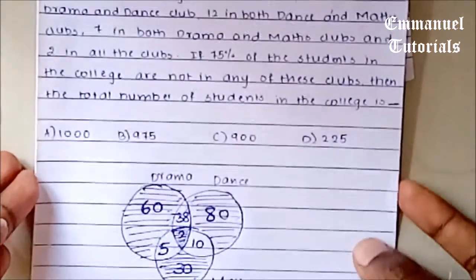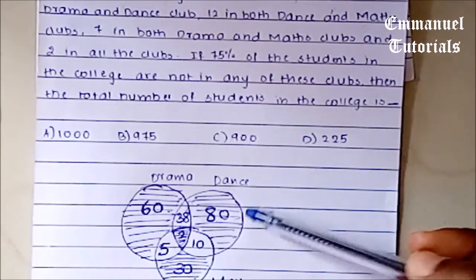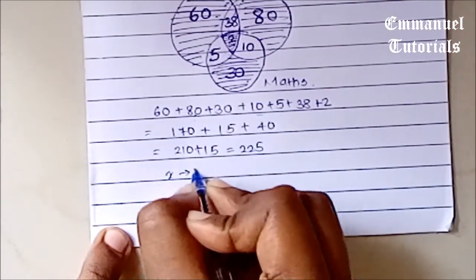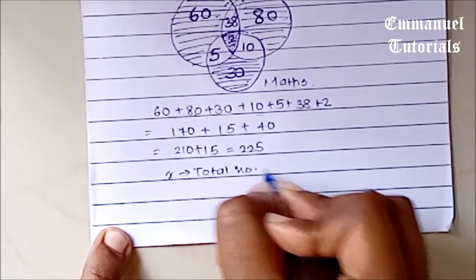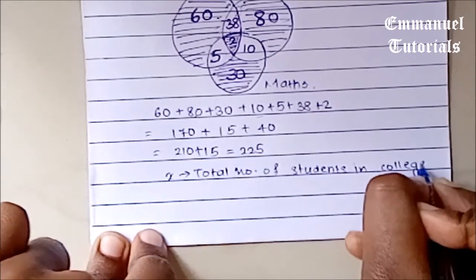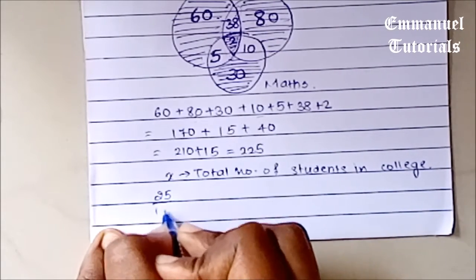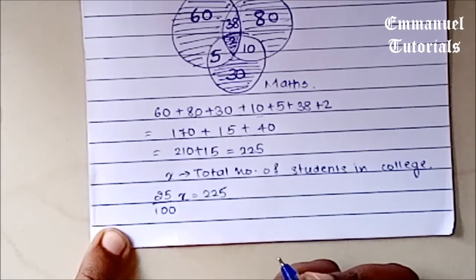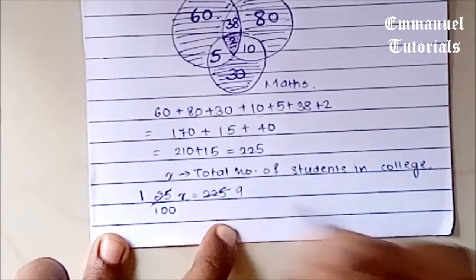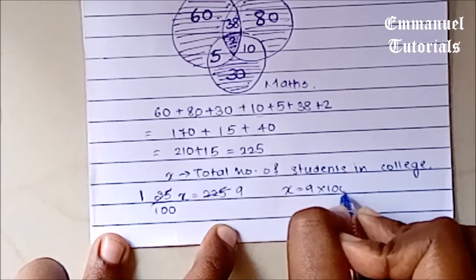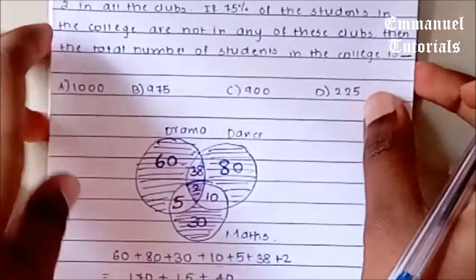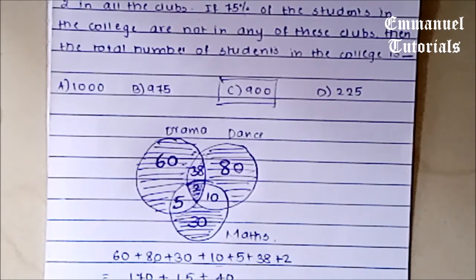We established that only 25% of the students are participating in the clubs. So if x is the total number of students in the college, then 25% of x equals 225. Solving: x equals 225 divided by 0.25, which gives x equals 900. So the correct option is C — the total number of students in the college is 900.